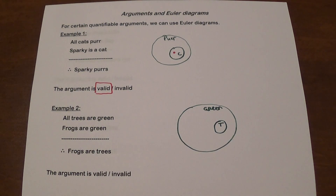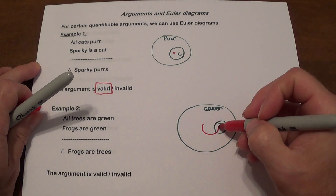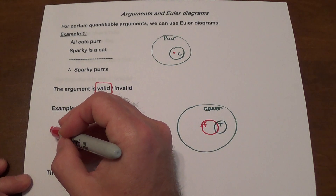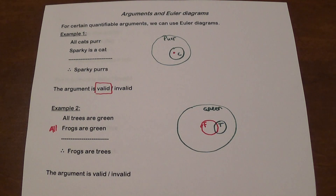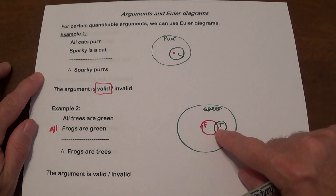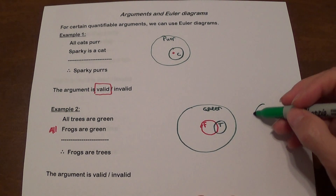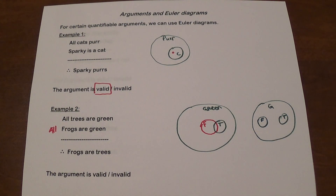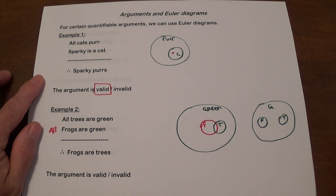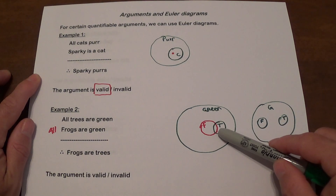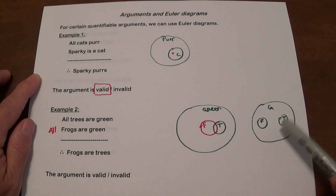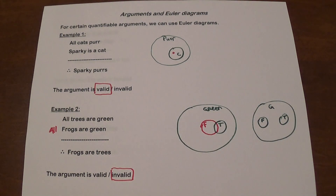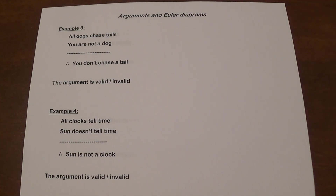Since all frogs are green, the frogs circle could overlap with the trees circle — in that case you have an overlap between frogs and trees, and that would support the conclusion. But there is another possibility: you can draw green as the large circle, trees inside it, and frogs as a separate circle inside green that does not overlap with trees. Because you can draw one that makes the conclusion false, this argument is invalid.